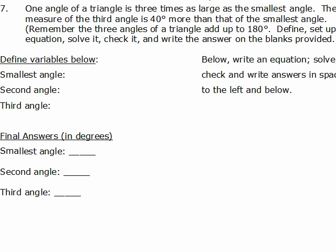One angle of a triangle is 3 times as large as the smallest angle, and the measure of the third angle is 40 more than that of the smallest angle. The 3 angles add up to 180 degrees, so we need to define variables and set up an equation. Let the smallest angle be x. One angle is 3 times as large, so that's 3x. The third angle is 40 degrees more than the smallest, so that's x plus 40.